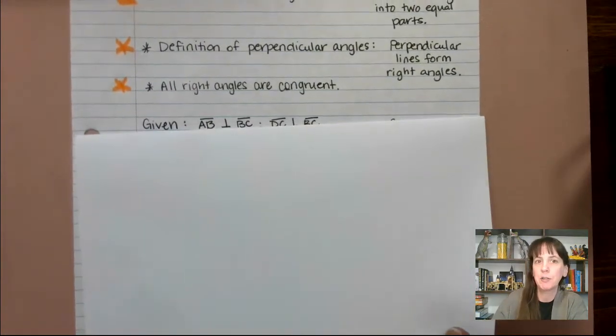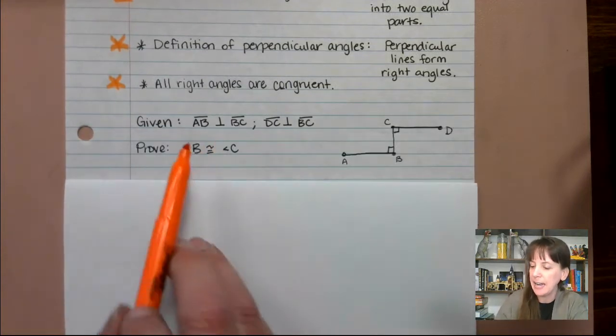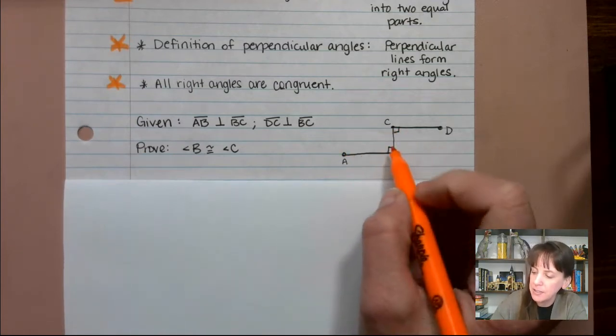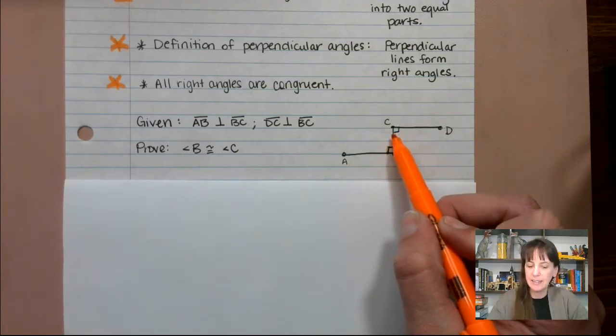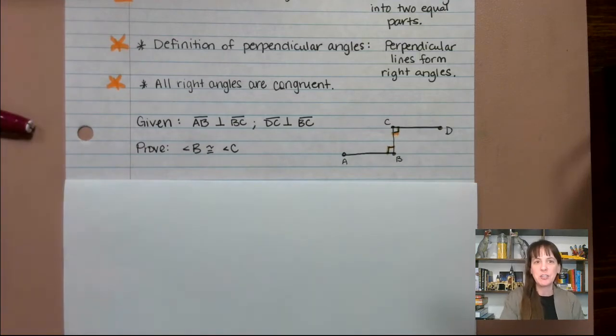All right, so let's talk about our first proof here. We are given that angle AB is perpendicular to BC. So this guy is perpendicular to that. So we are given this, and we are given that this guy is perpendicular to that. Given that information, we need to prove that angle B is congruent to angle C.